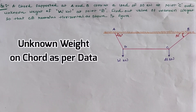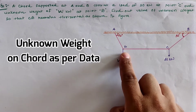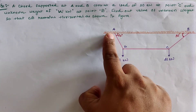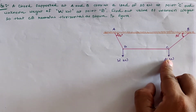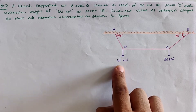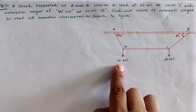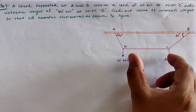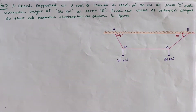Hello friends, today we are going to calculate the unknown load hanging at location D. The given cord is supported at locations A and B, carries a load of 20 kilonewton at location C, as well as an unknown load at point D which is W kilonewton. We have to find out this unknown load so that CD remains horizontal — meaning the CD line is parallel to the fixed support.